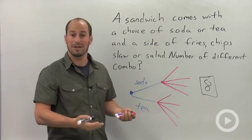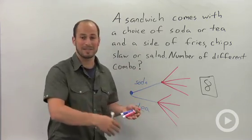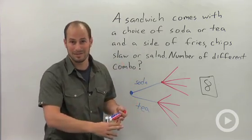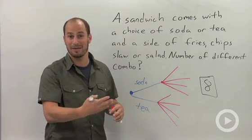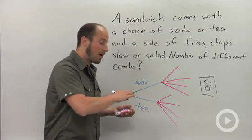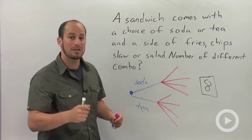But once you start dealing with a lot more ingredients, so say we had different toppings on our sandwich or many different desserts or who knows what, you're going to start getting a lot of branches and it's going to become a little bit overwhelming. It'll always get you through it, but it's not always going to be the most efficient thing.